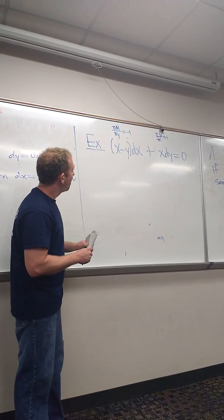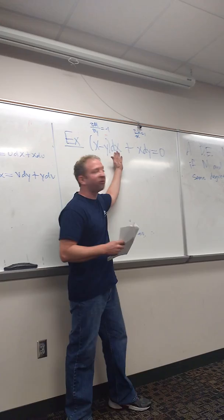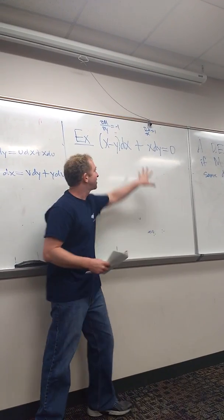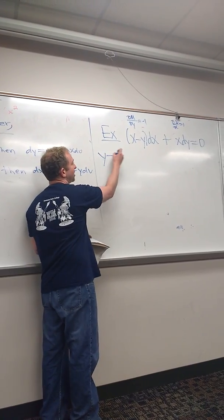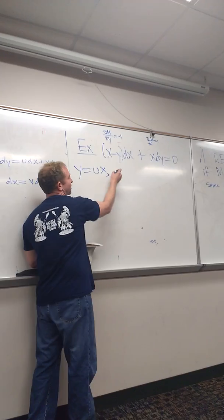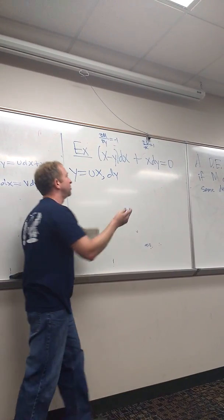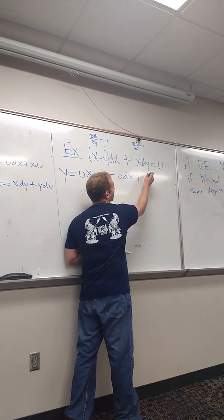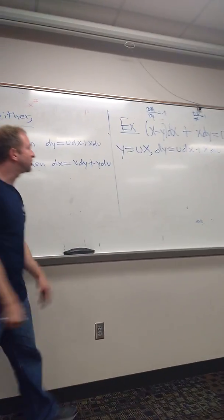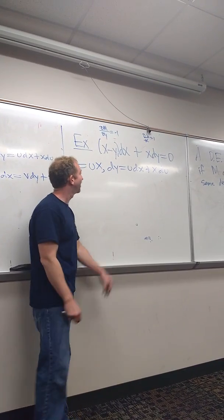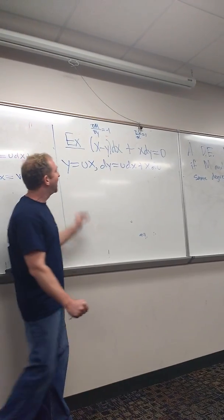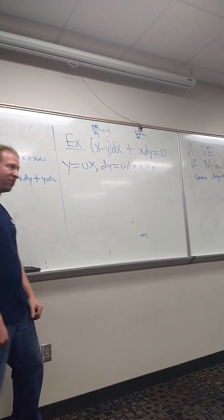Okay, so now we have to pick. Should we let y equal ux or x equal vy? What's easier in this case? Y equals ux, yeah, because then dy is easier. Let's do that. So we're going to let y equal ux, and then dy would be u dx plus x du.